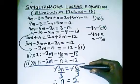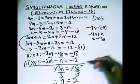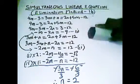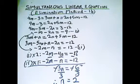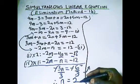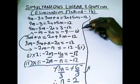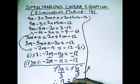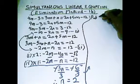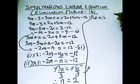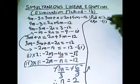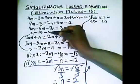We get n equals 2 by dividing 6 by 3. Now we take this value of n equals 2 and substitute it back into equation 1, which is minus m minus 2n equals minus 9.